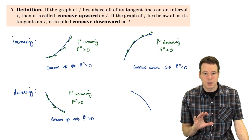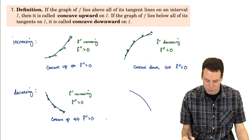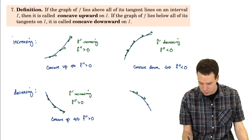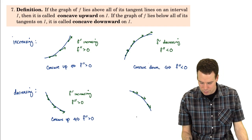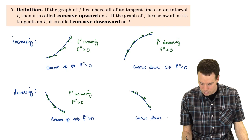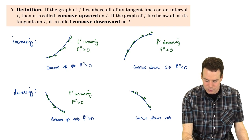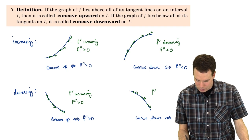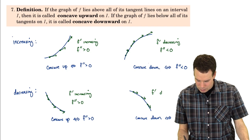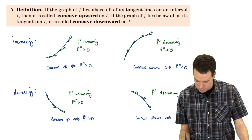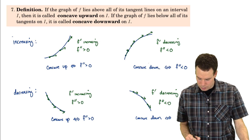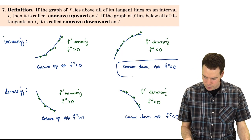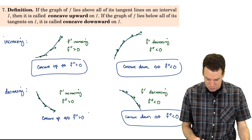So even in the case where the function is decreasing, we still have this connection of concavity with the sign of the second derivative. What about when it's decreasing and concave down? The tangent lines are all sitting above the curve. We'd like to say that's equivalent to the second derivative being negative. In this case the first derivative is decreasing, becoming more and more negative, so f double prime is negative and therefore it's concave down when f double prime is negative. All of these cases are in agreement.